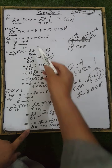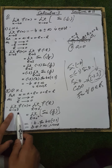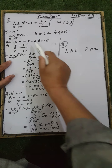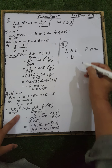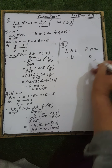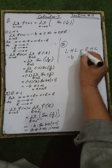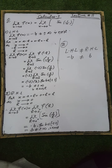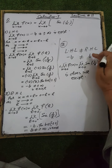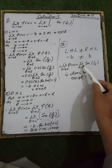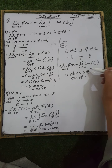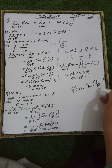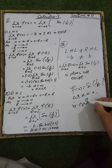The left-hand limit of the given function equals minus b and exists, while the right-hand limit at point zero also exists and equals b. Since the left-hand limit equals minus b and the right-hand limit equals b, but minus b is not equal to plus b, the third condition for the existence of a limit fails to hold. Therefore, we conclude that the limit of the function sine of 1 over x as x tends to 0 does not exist.